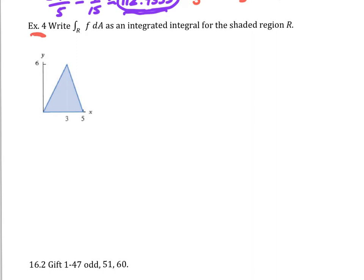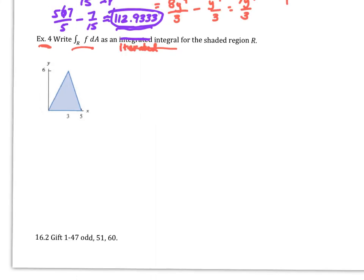Example 4: given a multiple integral of f over some region R as a double integral over a shaded region, write it as an iterated integral. If we make vertical cuts, there are two different dimensions on those cuts, so it's better to go across with horizontal cuts. The region is bounded by y = 2x and a line with slope negative 3.